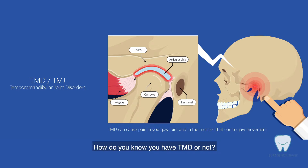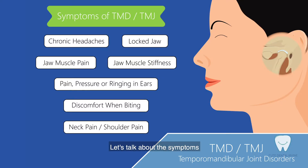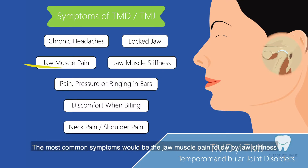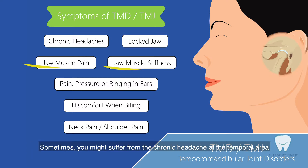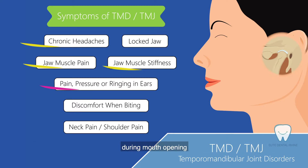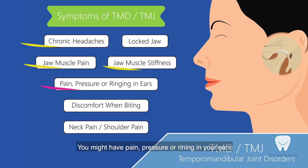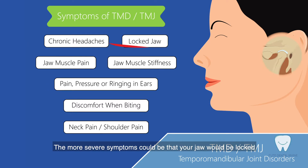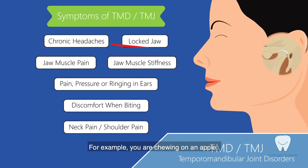So how do you know if you have TMD or not? Let's talk about the symptoms. The most common will be jaw muscle pain, followed by jaw muscle stiffness. Sometimes you might suffer from chronic headaches around the temporal area. As the situation gets a little bit worse, you might hear clicking of the joints during mouth opening, and you might also have pain, pressure, or ringing in your ears. The most severe symptom is that your jaw could lock — for example, while chewing an apple, you end up unable to close your mandible.